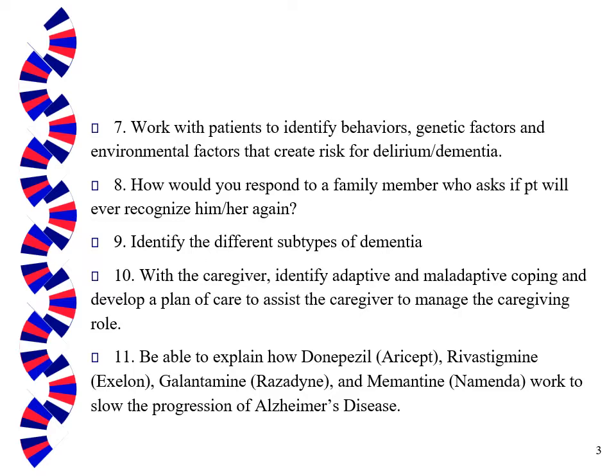Number seven: work with patients to identify behaviors, genetic factors, and environmental factors that create a risk for delirium and dementia — which is something you'll do if you're able to go to the Alzheimer's clinic. Number eight: how would you respond to a family member who asks if the patient will ever recognize him or her again? Number nine: identify the different subtypes of dementia. Number ten: with the caregiver, identify adaptive and maladaptive coping mechanisms and develop a plan of care to assist a caregiver to manage the caregiving role. And number eleven: be able to explain how Aricept, Exelon, Razadyne, and Namenda work to slow the progression of Alzheimer's disease.